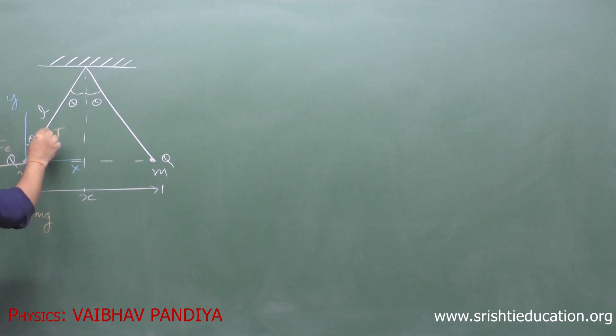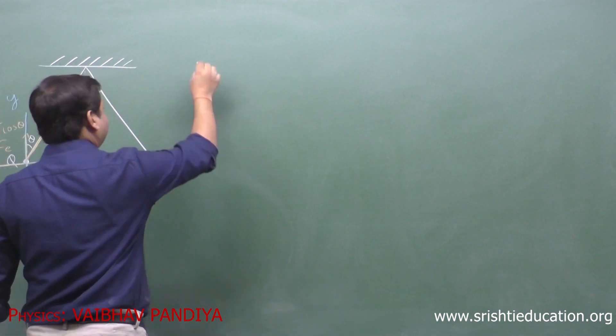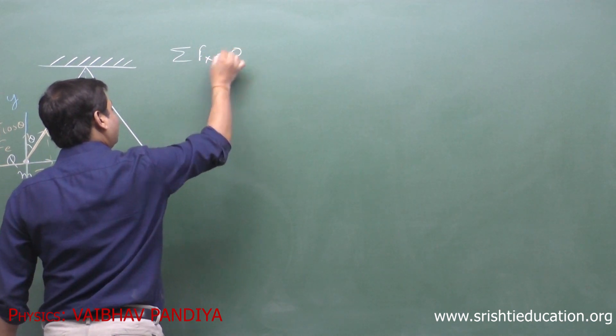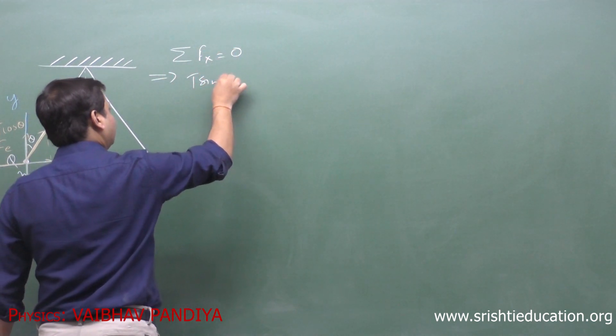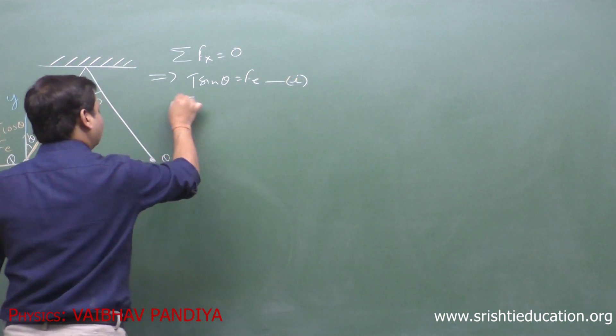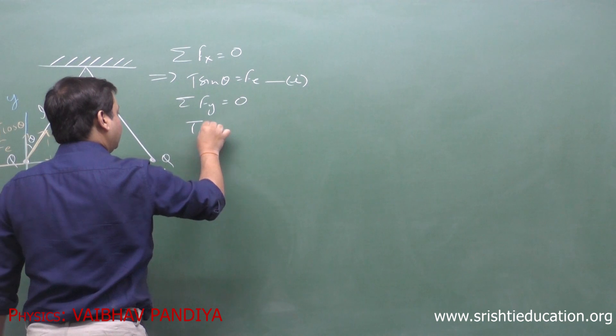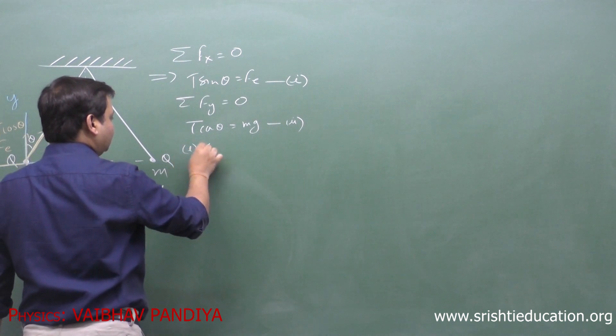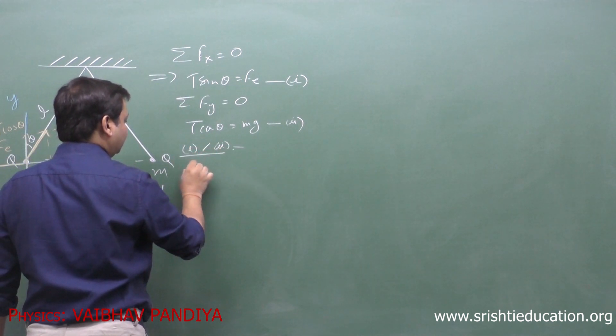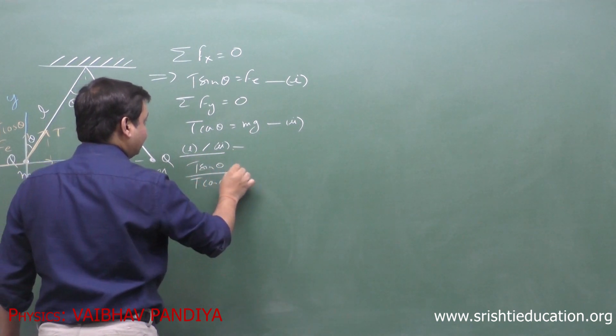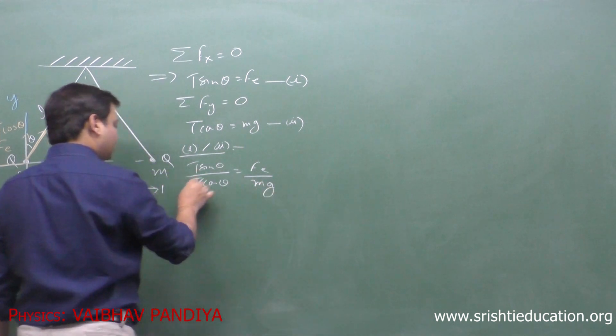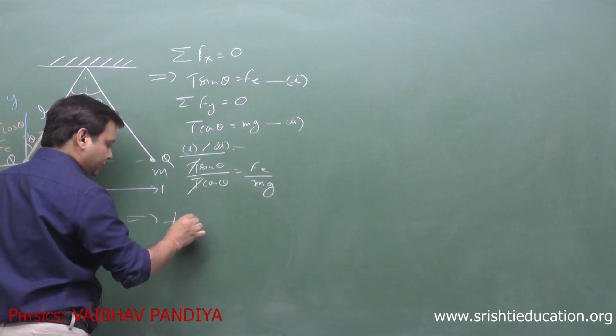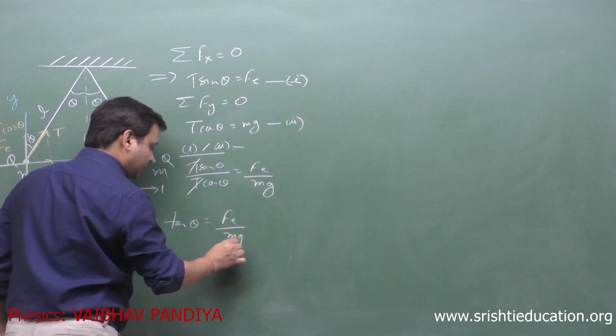We have seen this angle was also theta. This will be T cos theta. So we will have the equation T sin theta equals Fe, and T cos theta equals Mg. If we divide equation number 1 by 2, we get T sin theta by T cos theta equals Fe by Mg. T will get cancelled away, and I will have tan theta equals Fe by Mg.